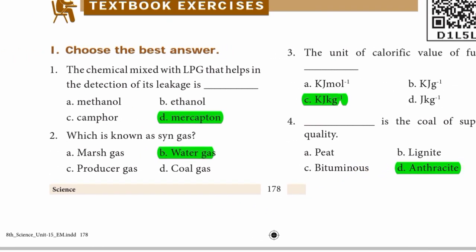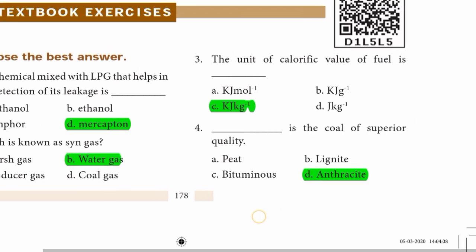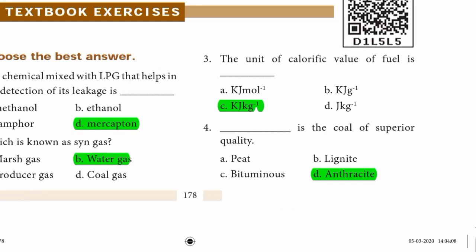First one: The chemical mixed with LPG that helps in the detection of its leakage — the answer is option D: mercaptan. Second: Which is known as syngas? The answer is option B: water gas. Third one: The unit of calorific value of fuel is kilojoule per kilogram.